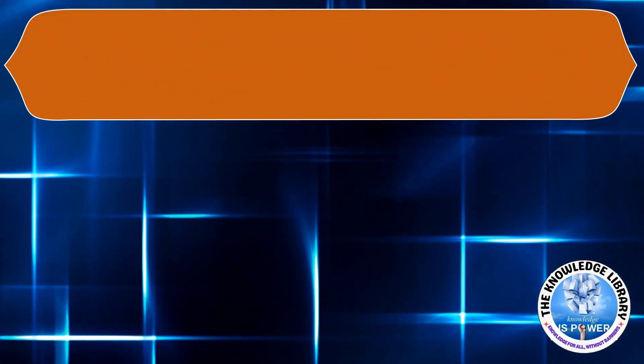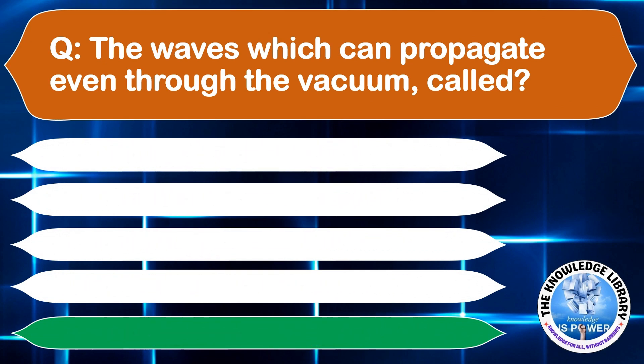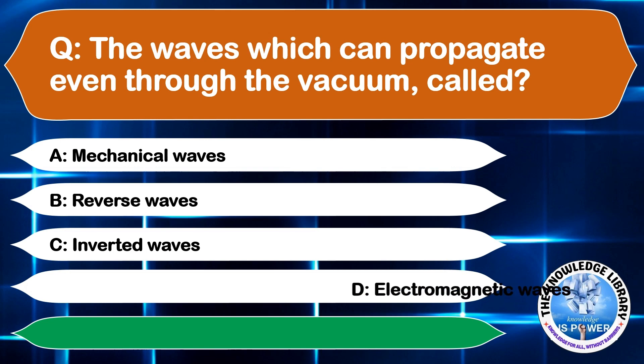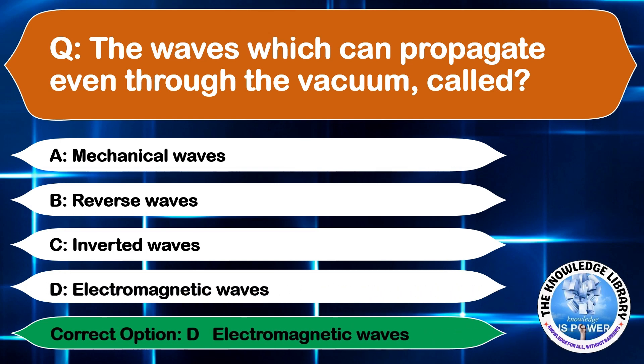The waves which can propagate even through the vacuum are called: A: Mechanical waves, B: Reverse waves, C: Inverted waves, or D: Electromagnetic waves. The correct answer is option D, Electromagnetic waves.